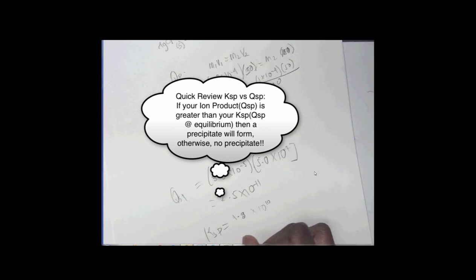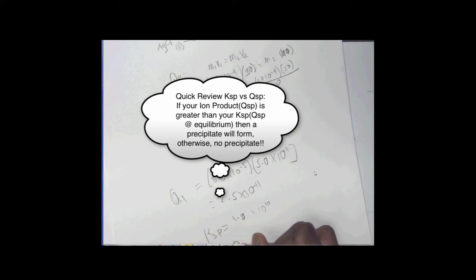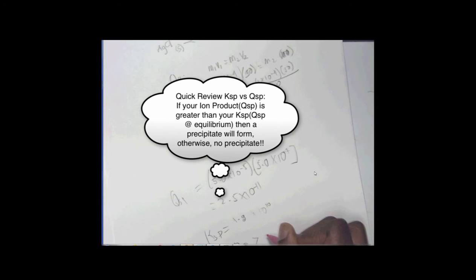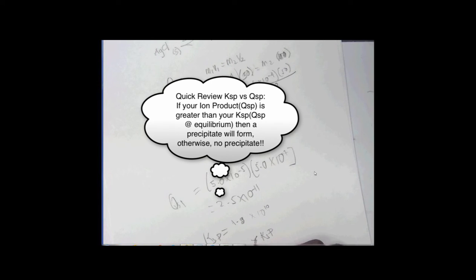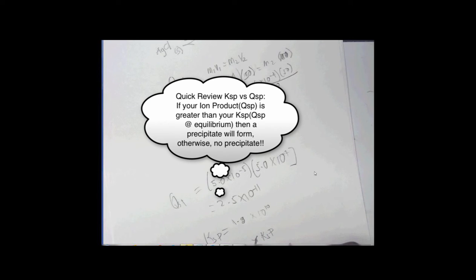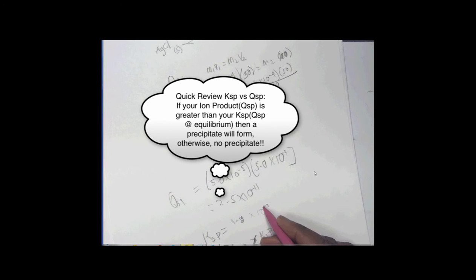So QSP is greater than KSP? No, it is actually less than. Negative 11 is less than negative 10, so yes. Precipitate or no precipitate? No precipitate. You got it.